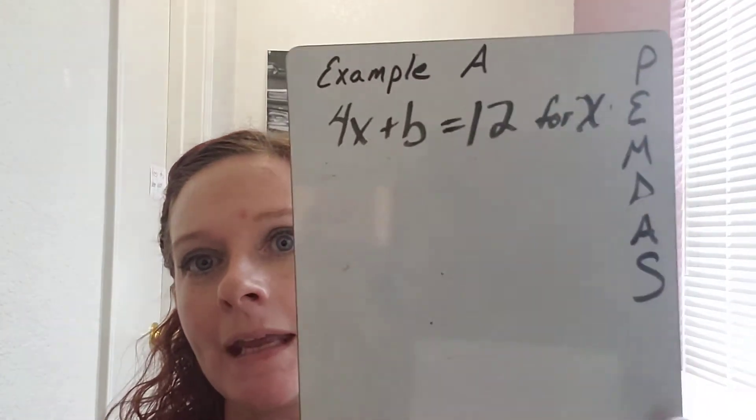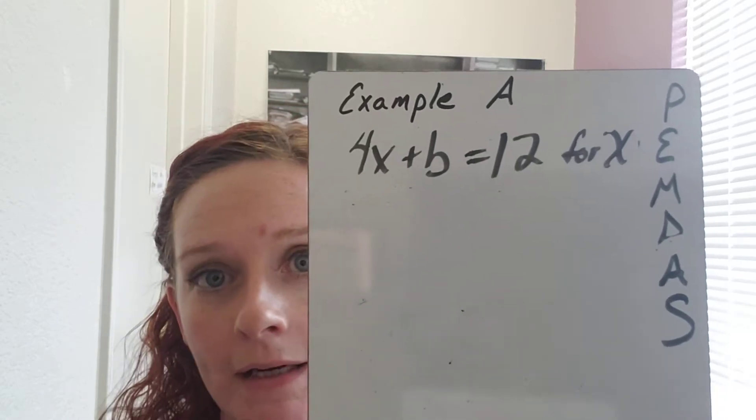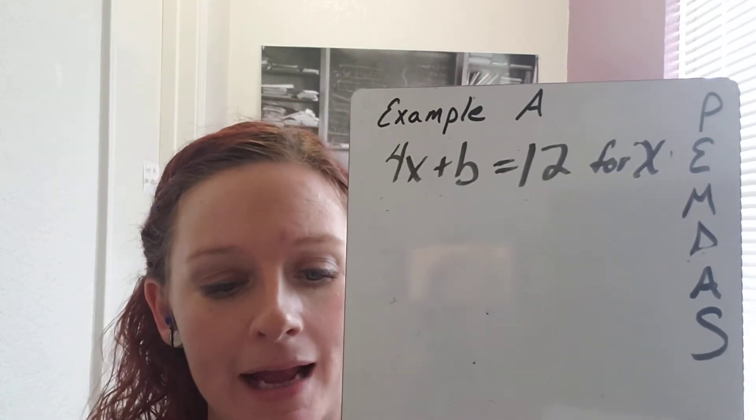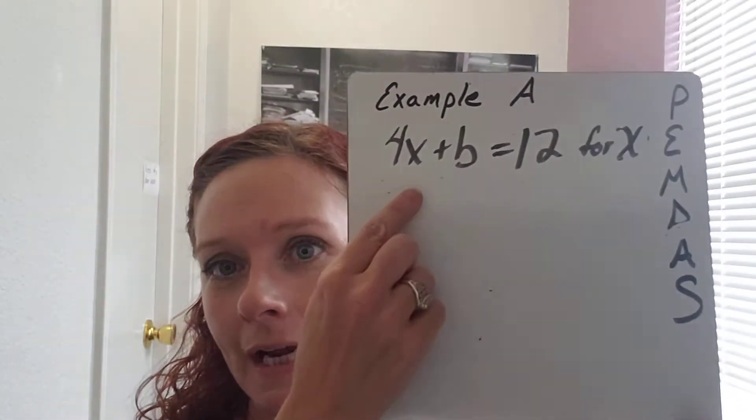This is example A. Example A says 4X plus B equals 12 for X. So step one, ask what variable am I isolating? X, you're isolating X. You know you're isolating X because it said for X.